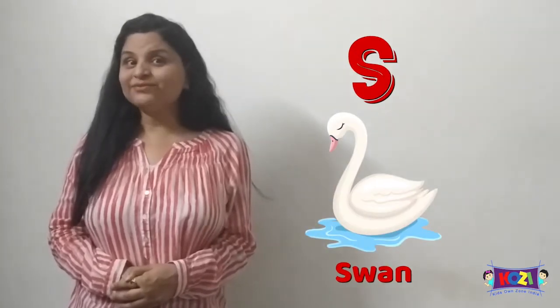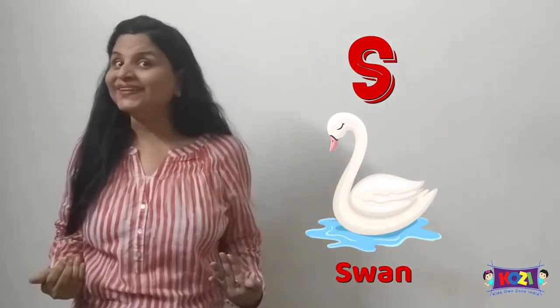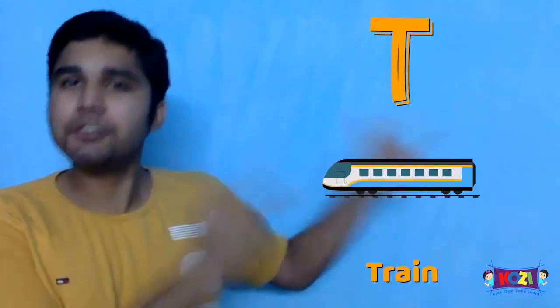R for rabbit and R for radish. S for fox, S for sun and S for swan. T for tree, T for train.